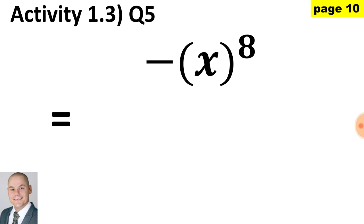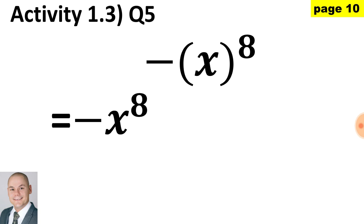In question 5, slightly different: we have x inside the bracket raised to the exponent of 8, all multiplied by a coefficient of minus 1. Therefore, we would end up with a negative coefficient multiplied by x to the 8.